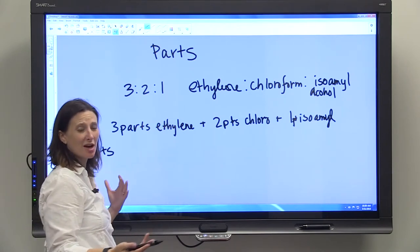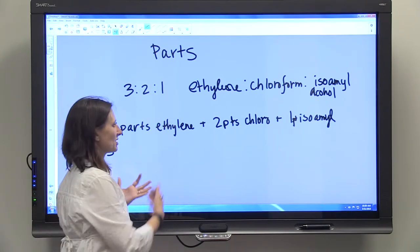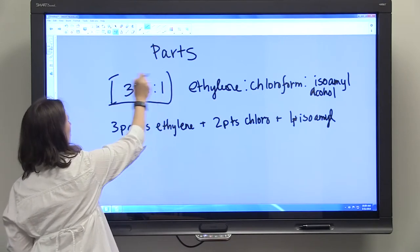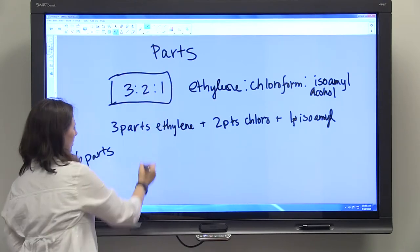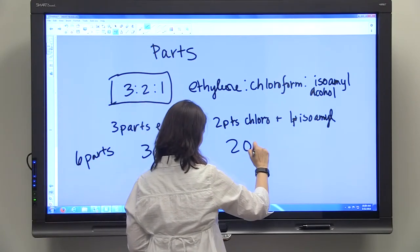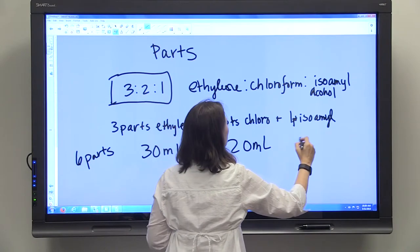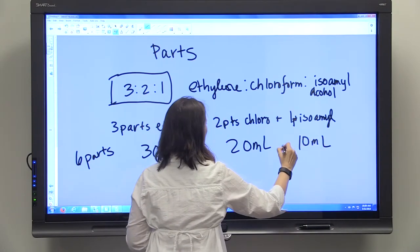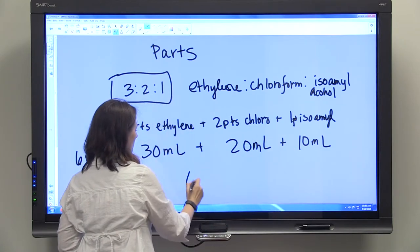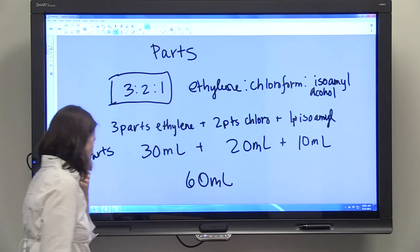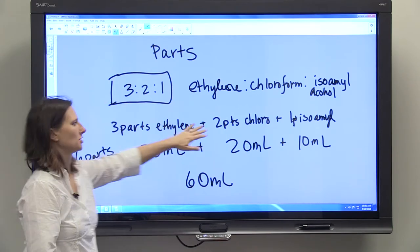Sometimes they tell you what the final volume needs to be, but sometimes you just get that you need parts 3 to 2 to 1. So you could add 30 ml's of ethylene, 20 ml's of chloroform, and 10 ml's of isoamyl alcohol for a final volume of 60 ml's, and that would give you 3 to 2 to 1.